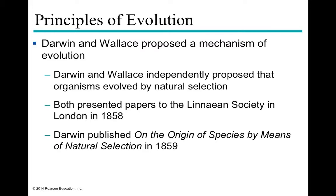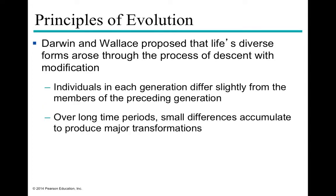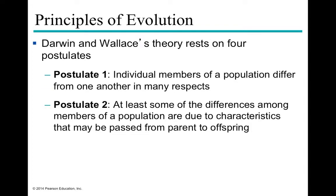Darwin and Wallace independently proposed mechanisms of natural selection and presented papers in 1858 in London. Darwin's paper led to the publication of On the Origin of Species by Means of Natural Selection in 1859, still widely renowned today. The central idea is descent with modification: every generation is slightly different from the preceding one. While changes aren't detectable from one generation to the next, over very long time periods, small differences accumulate and produce major transformations.